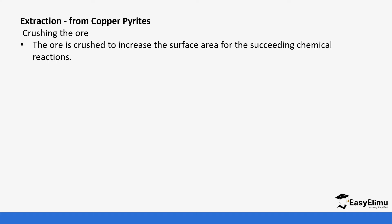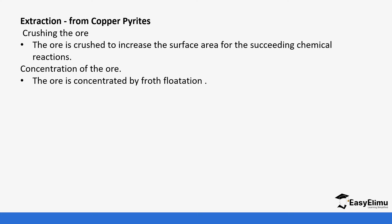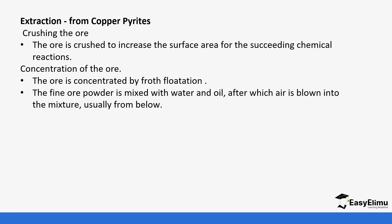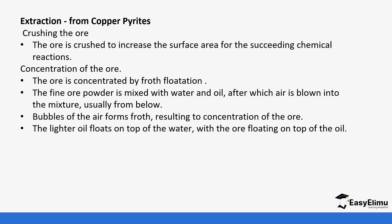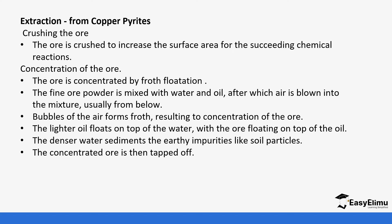For the extraction of copper pyrite, there is first crushing of the ore to increase surface area to help in the chemical reaction, and then the ore is concentrated by froth flotation. Notice that lead was also concentrated by froth flotation. The powder is mixed with water and oil, after which air is blown into the mixture from below. The bubbles of air form a froth, resulting in the concentration of the ore. The lighter oil flows on top of the water with the ore floating at the top, while the denser water sediments carry the impurities and the concentrated ore is skimmed off.